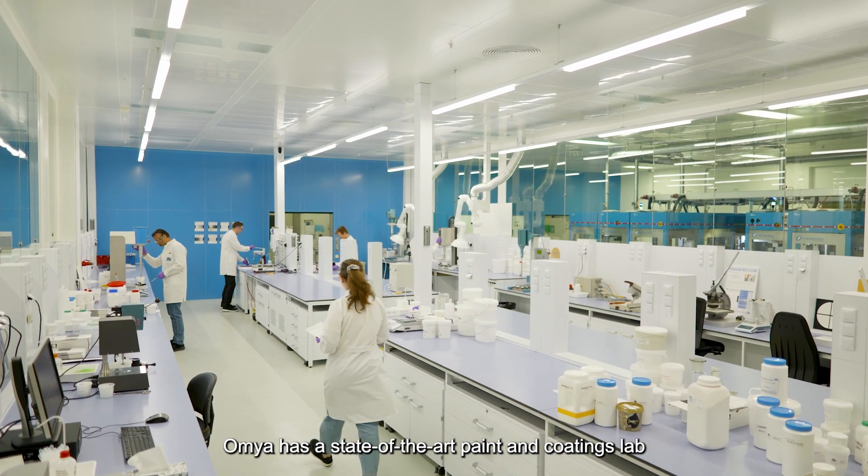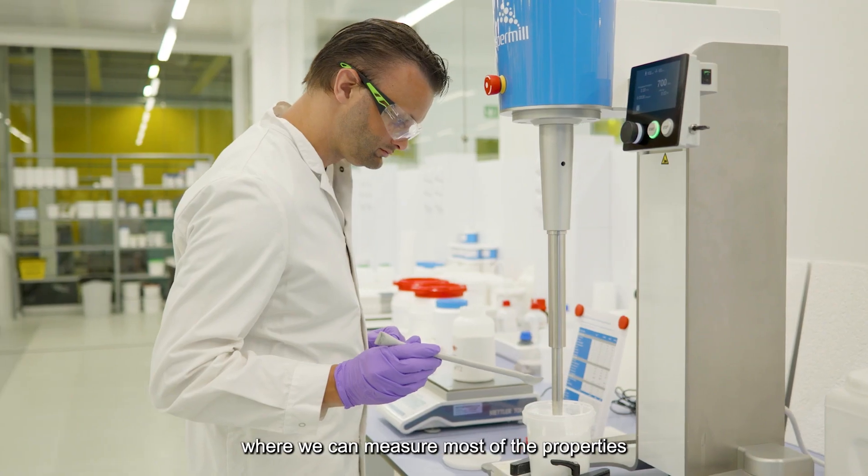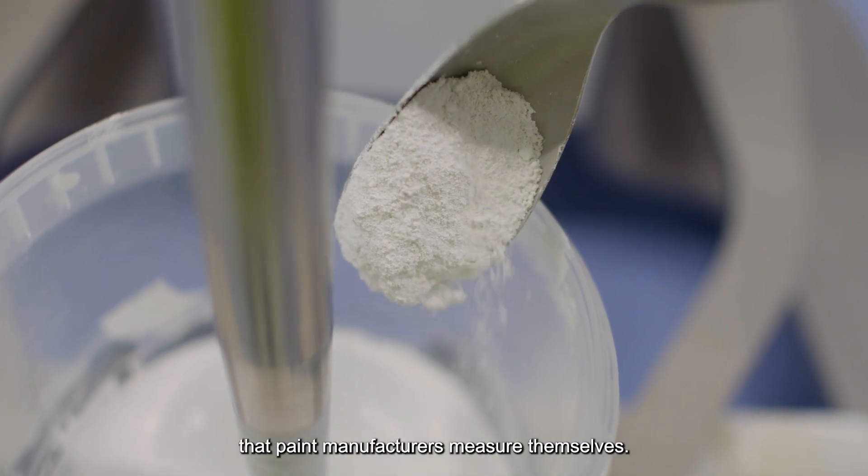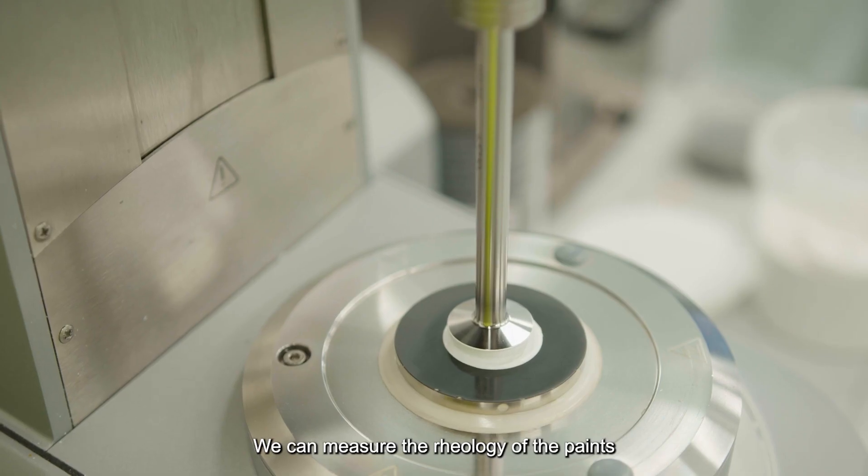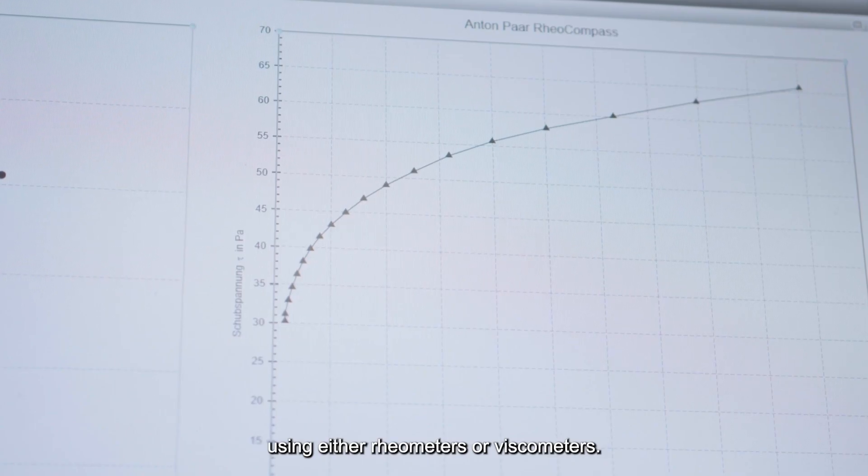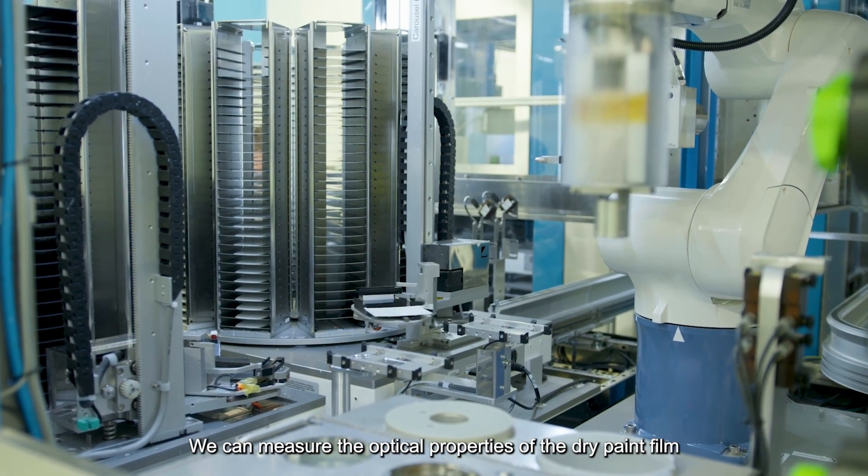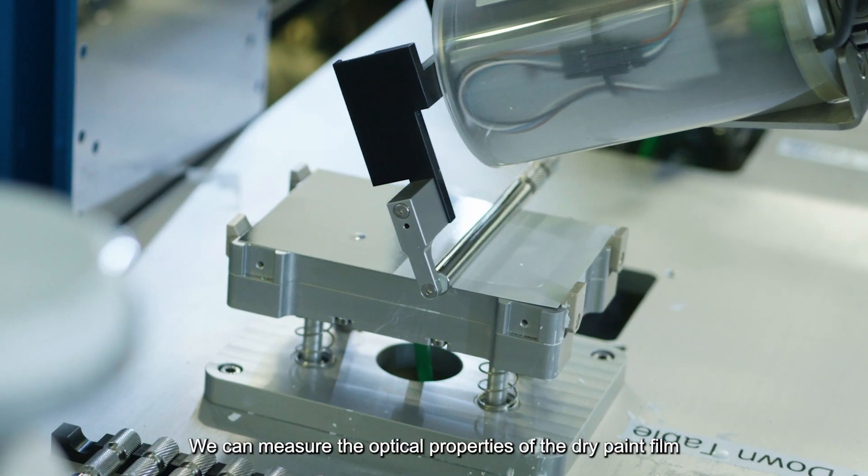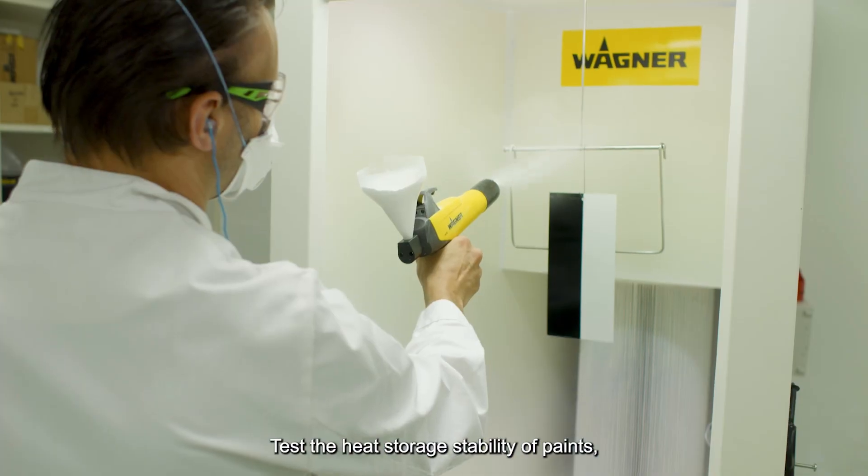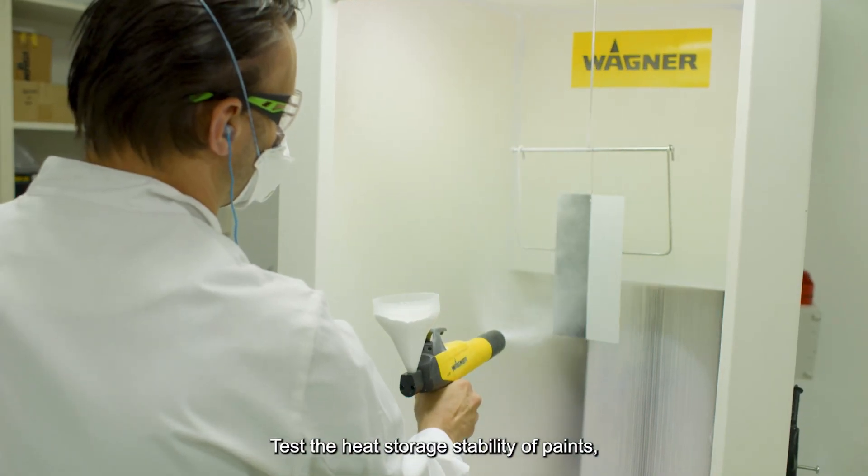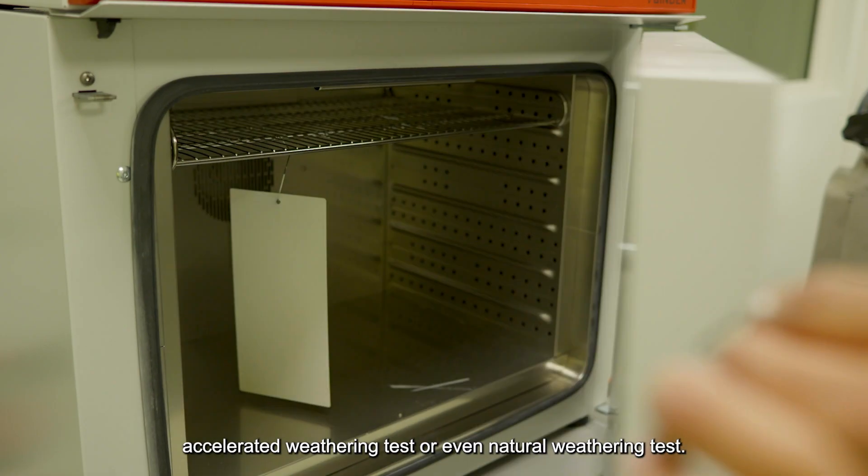OMIA has a state-of-the-art paint and coatings lab where we can measure most of the properties that paint manufacturers measure themselves. We can measure the rheology of the paints using either rheometers or viscometers, measure the optical properties of the dry paint film that we have applied in a drawdown, test the heat storage stability of paints, accelerated weathering tests, or even natural weathering tests.